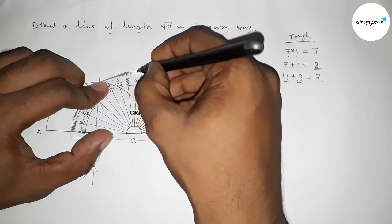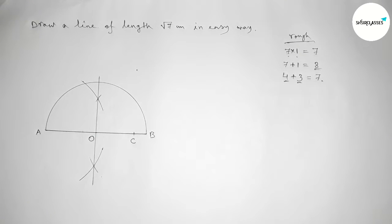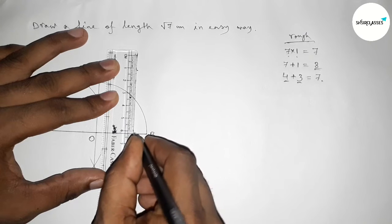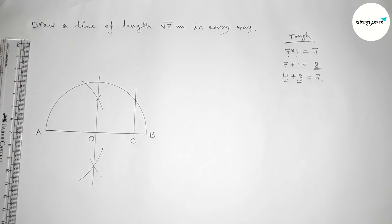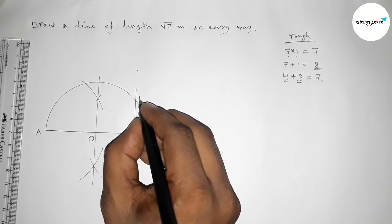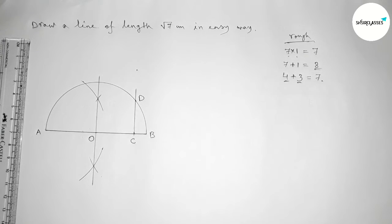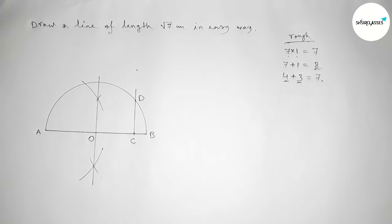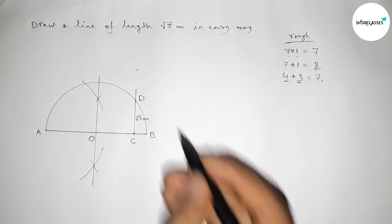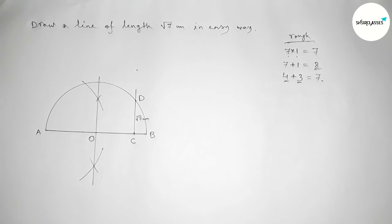Now drawing a 90 degree angle at point C using a protractor. Joining this perpendicular line, which meets the semicircle at a point — taking this as point D. So the length CD equals root 7 centimeter. Now I am going to prove that CD equals root 7 centimeter.